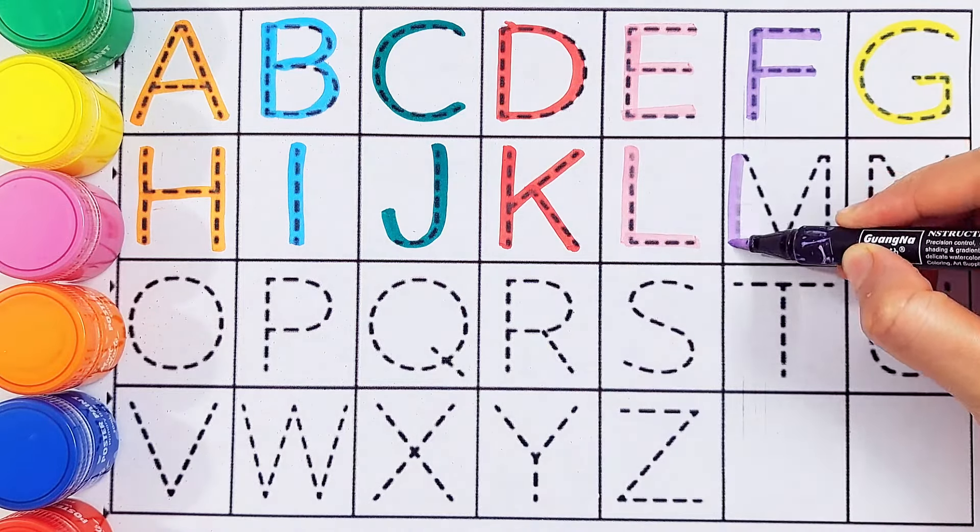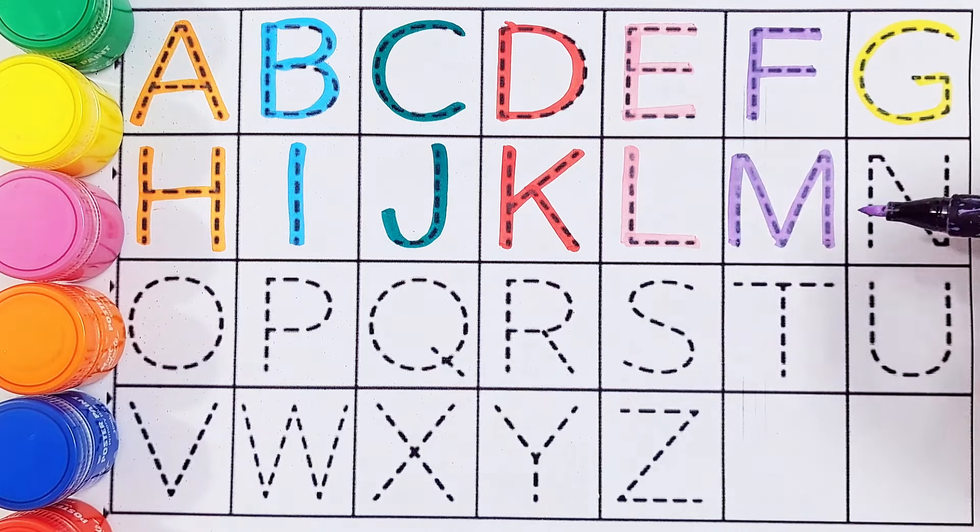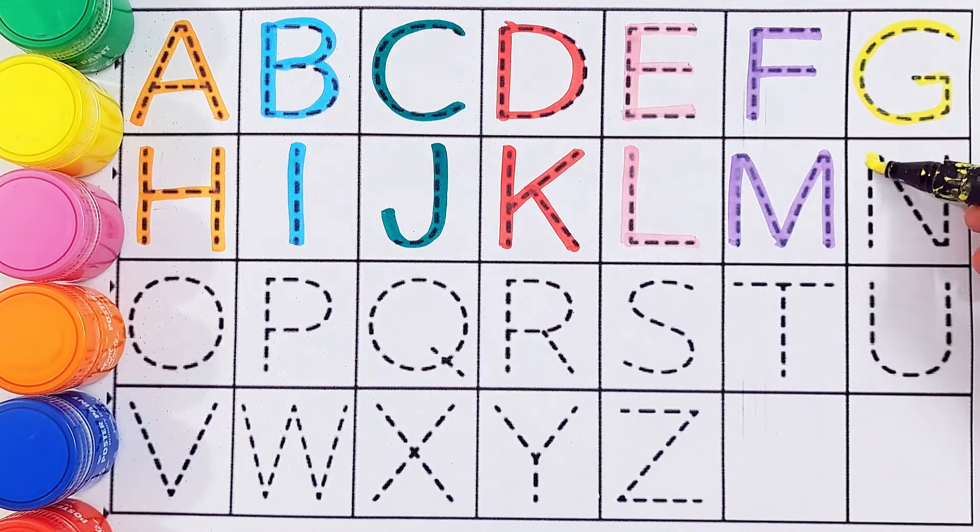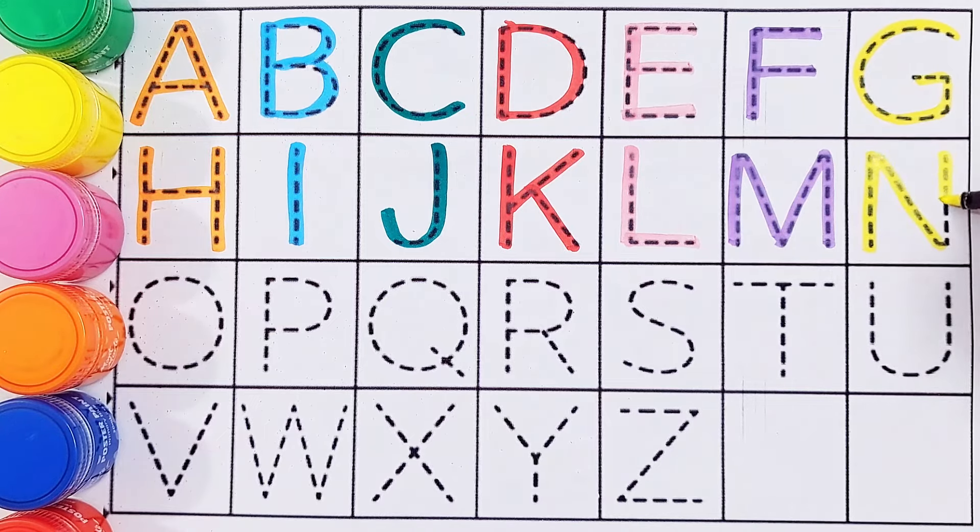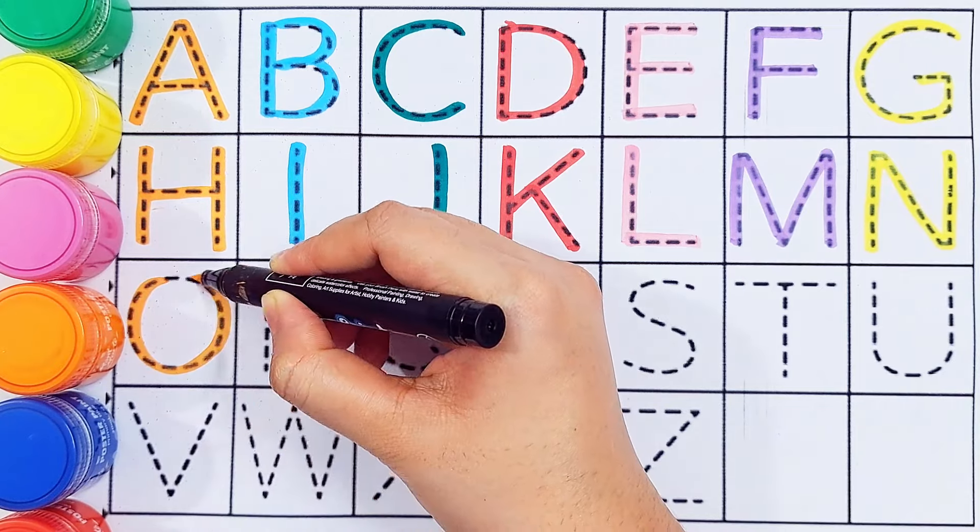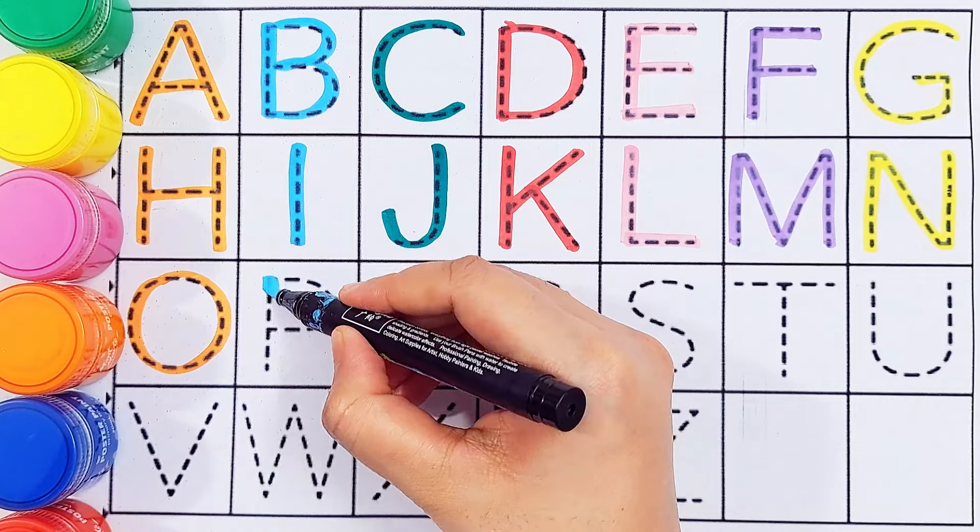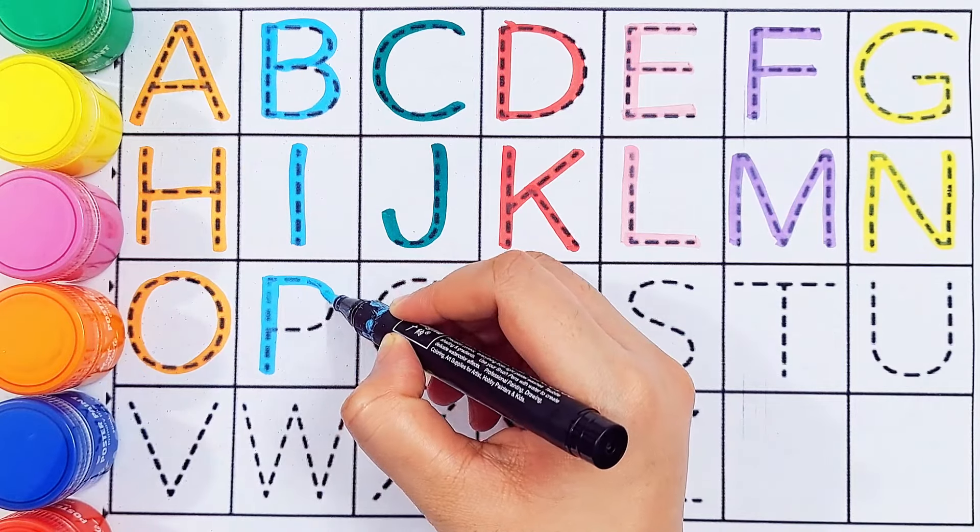M, M for mountain. N, N for nest. O, O for onion. P, P for pencil.